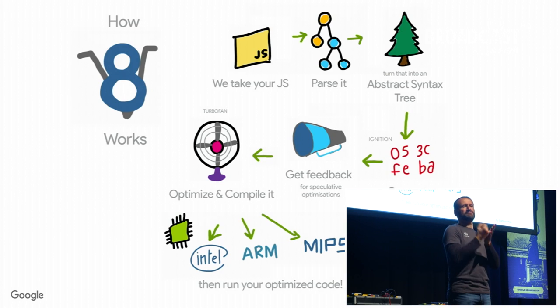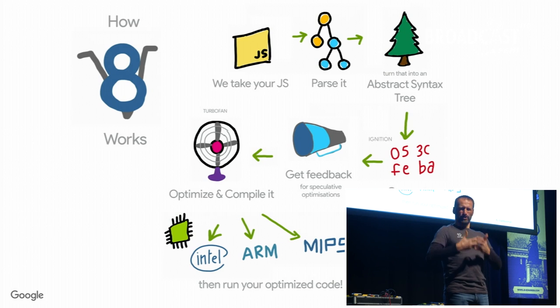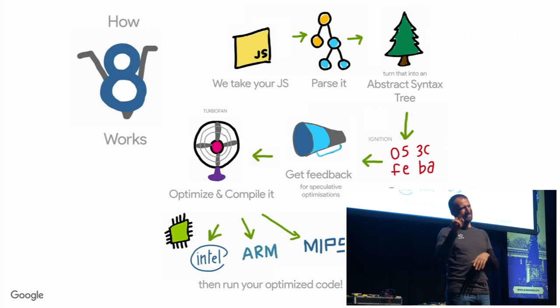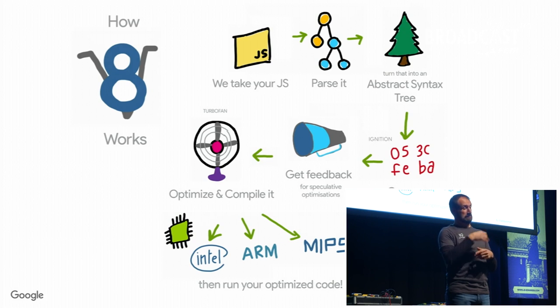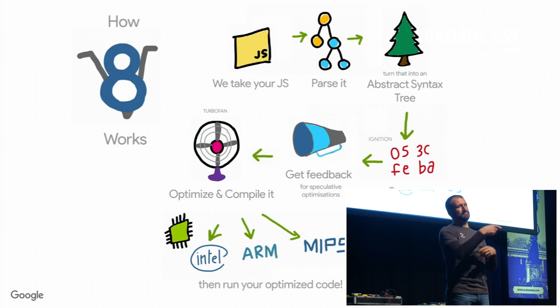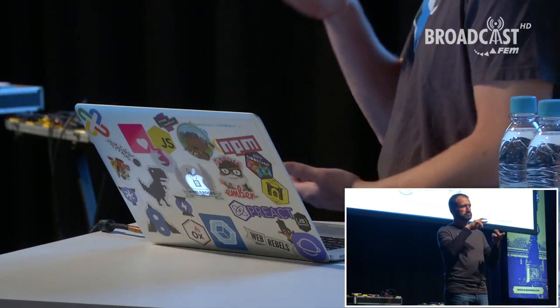So how does V8 work on a high level? I just borrowed this slide from my colleague, because I cannot draw. Whenever you run some JavaScript inside of Node or inside of Chrome, V8 takes your JavaScript and runs it through the parser and eventually constructs something we call an abstract syntax tree, which is a tree representation of your program. We then give that representation to the interpreter, and that turns it into bytecode and runs it.